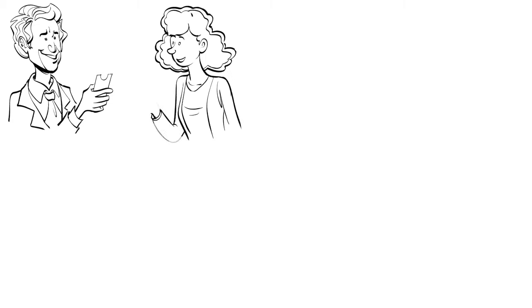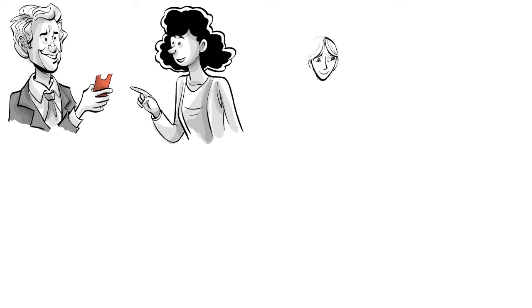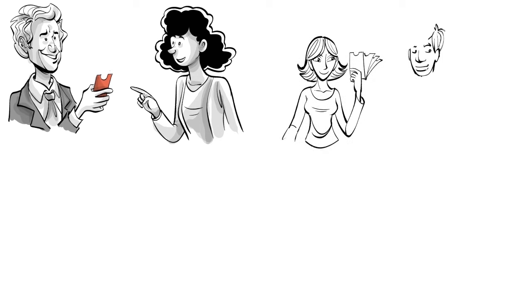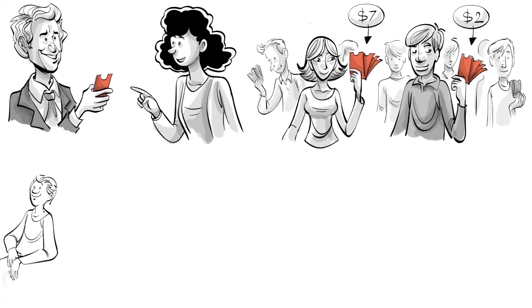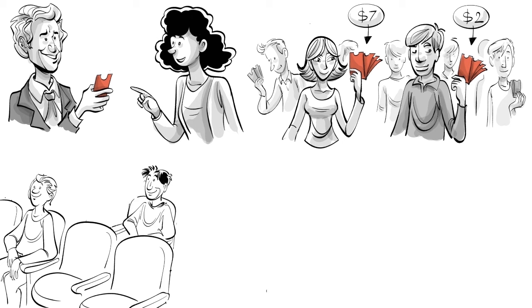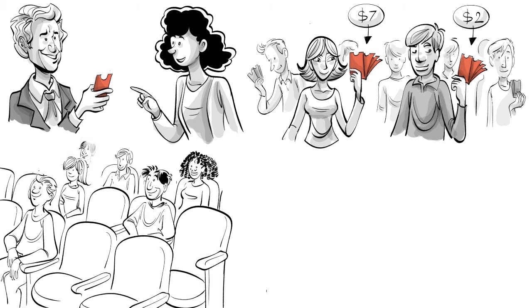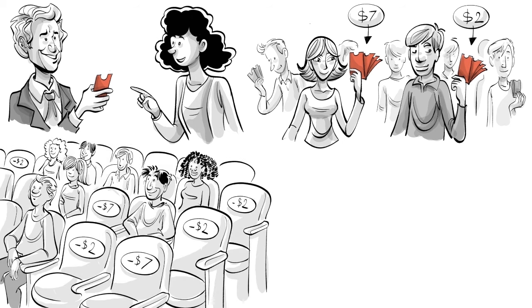To test the sunk cost fallacy, economists Hal Arx and Catherine Bloomer came up with an experiment using theatre season tickets. The regular price for the season was $15, but some people were randomly given discounts of either $7 or $2. It turned out that the people who had paid the regular price attended more plays than those who received a discount.